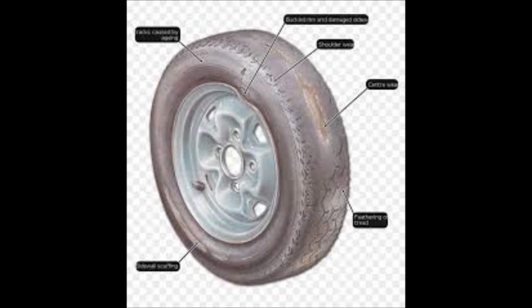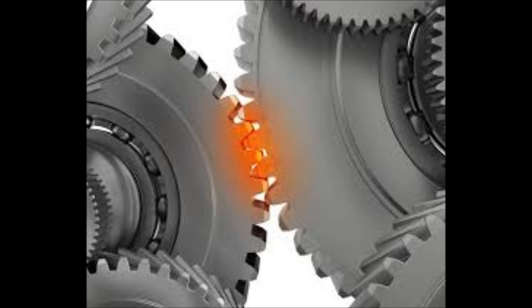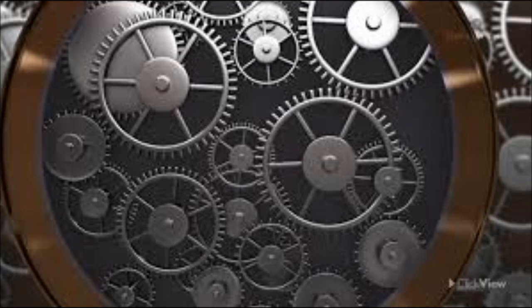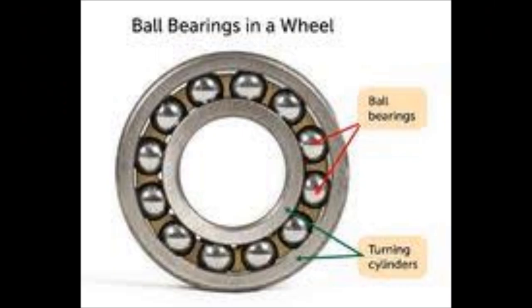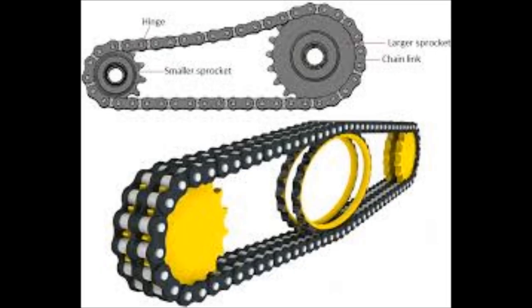The tires of bicycles also wear out gradually due to friction with the road. There are many moving parts in a machine like gears, etc., which rub against each other constantly. Due to friction, the rubbing parts wear out gradually. Friction also wears out moving parts like ball bearings in bicycles and other machines. The worn out or damaged parts then have to be replaced by new ones. Thus, friction wearing out rubbing machine parts is a disadvantage.